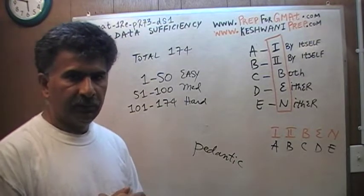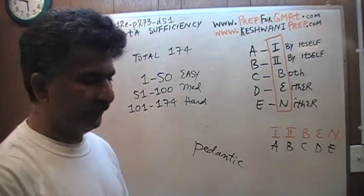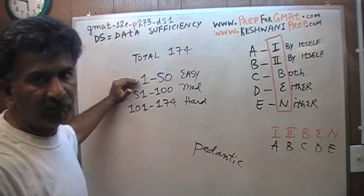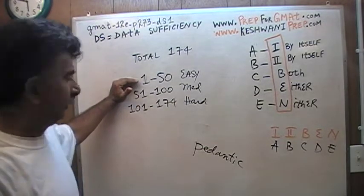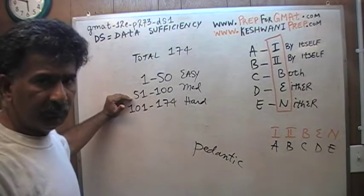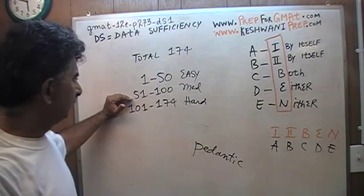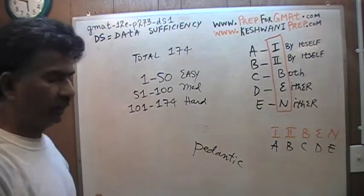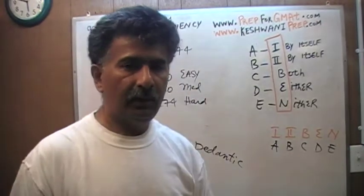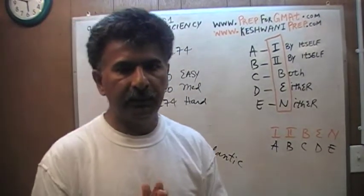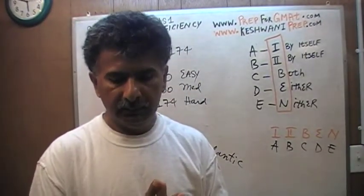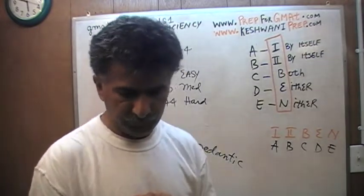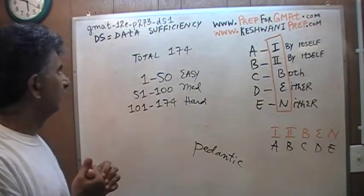In my previous clip, I mentioned there are 174 questions altogether. In my opinion, the first 50 are quite straightforward and easy. 51 through 100 are medium, a little more challenging. The last 74, from 101 through 174, are not all, but quite a few require some thinking and are a little challenging.